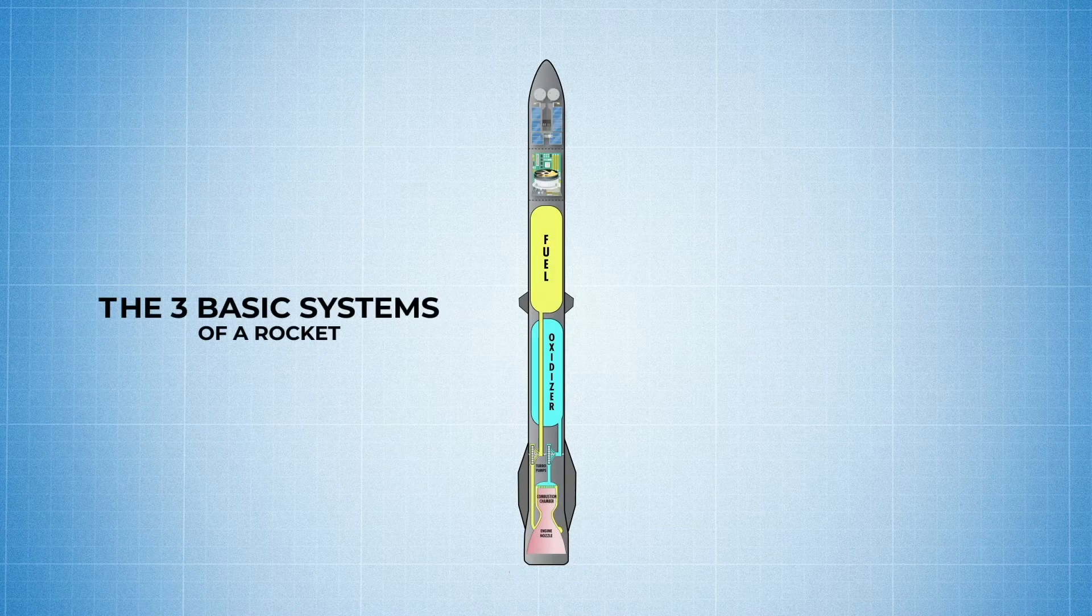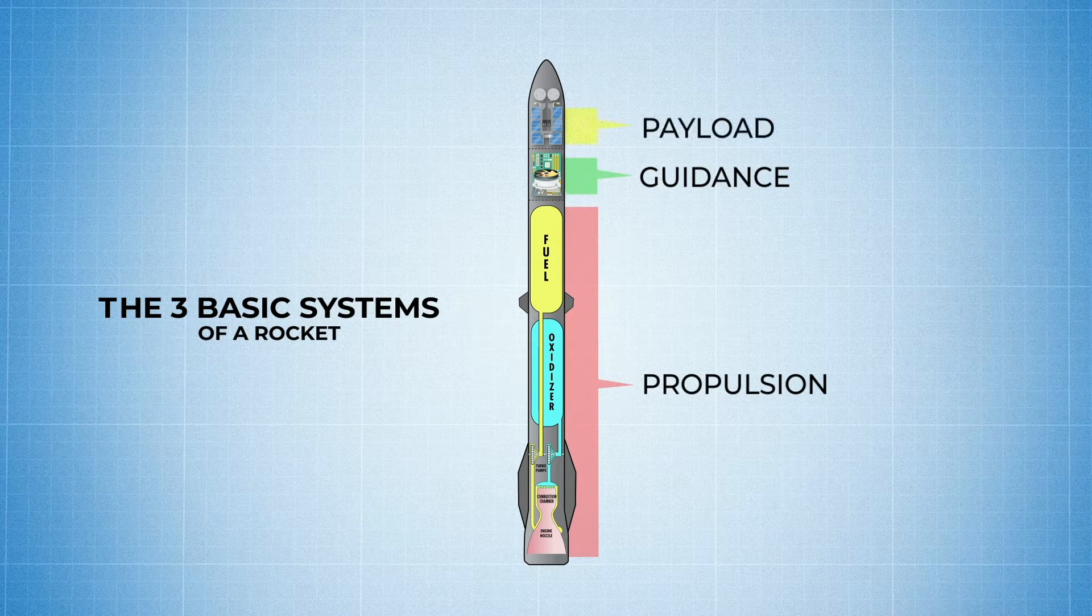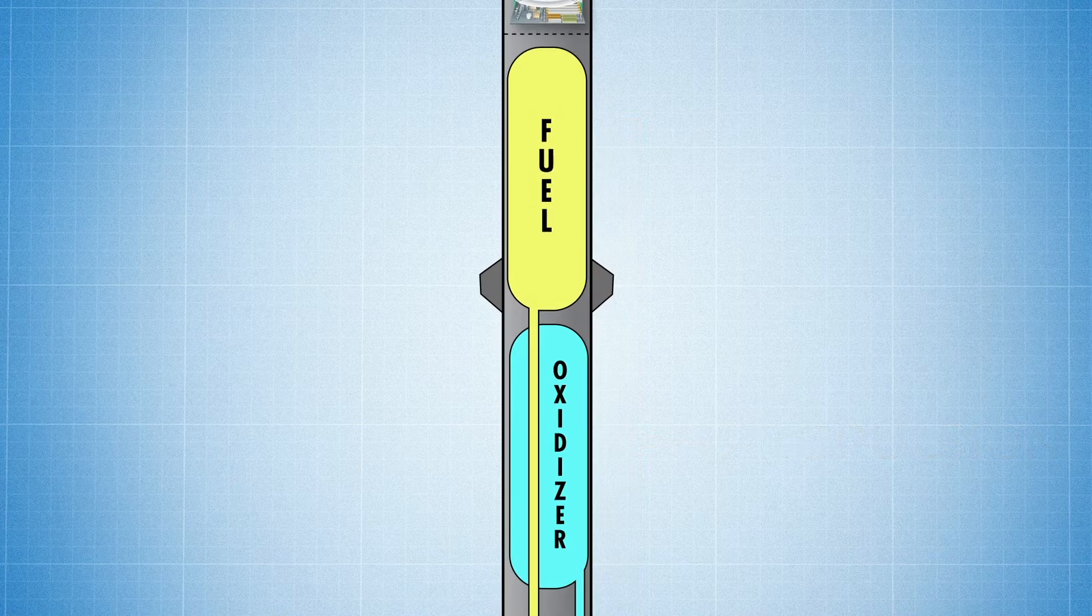If we break our rocket down into its three basic systems—propulsion, guidance, and payload—we can see just how vital sensing technology is here. Starting with the propulsion system.